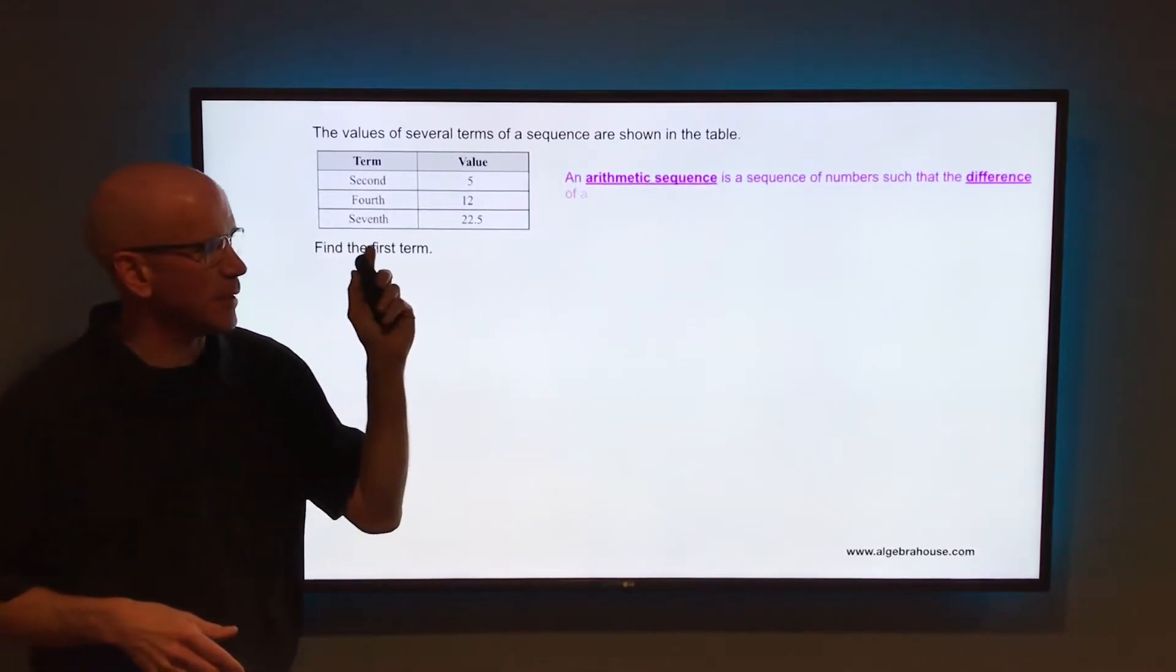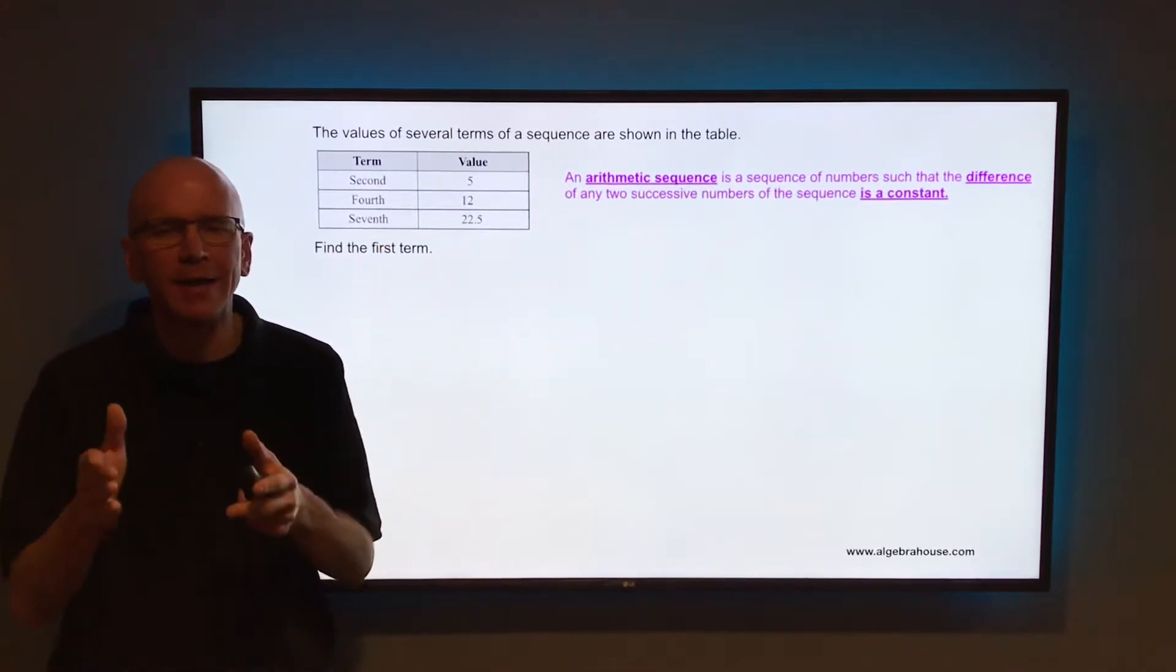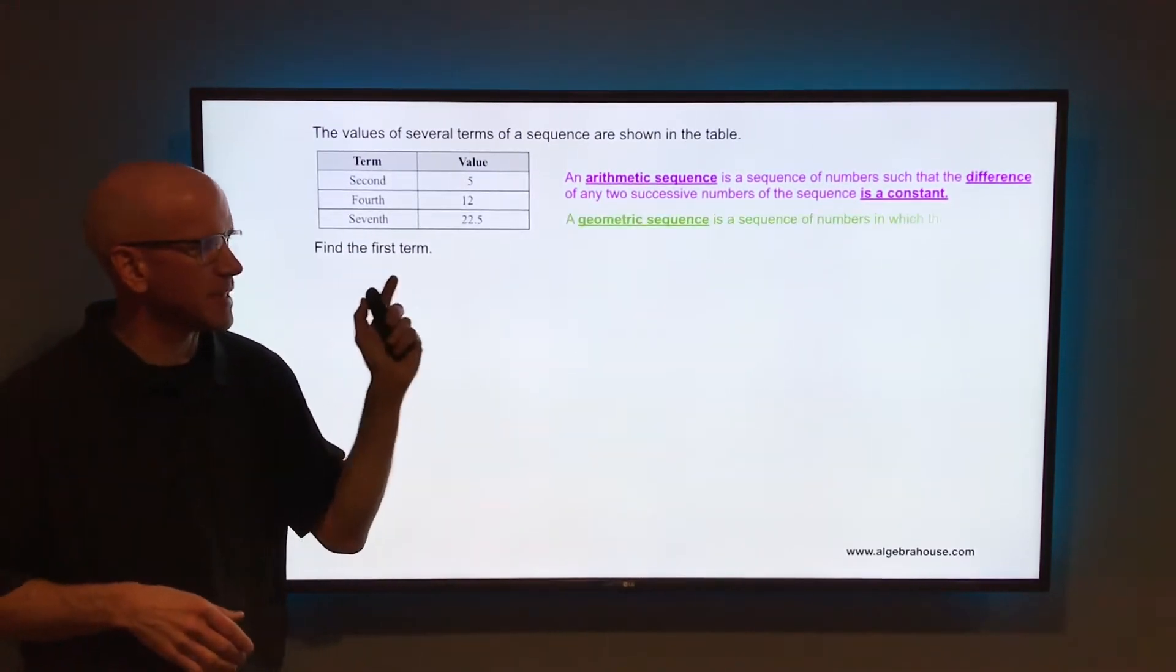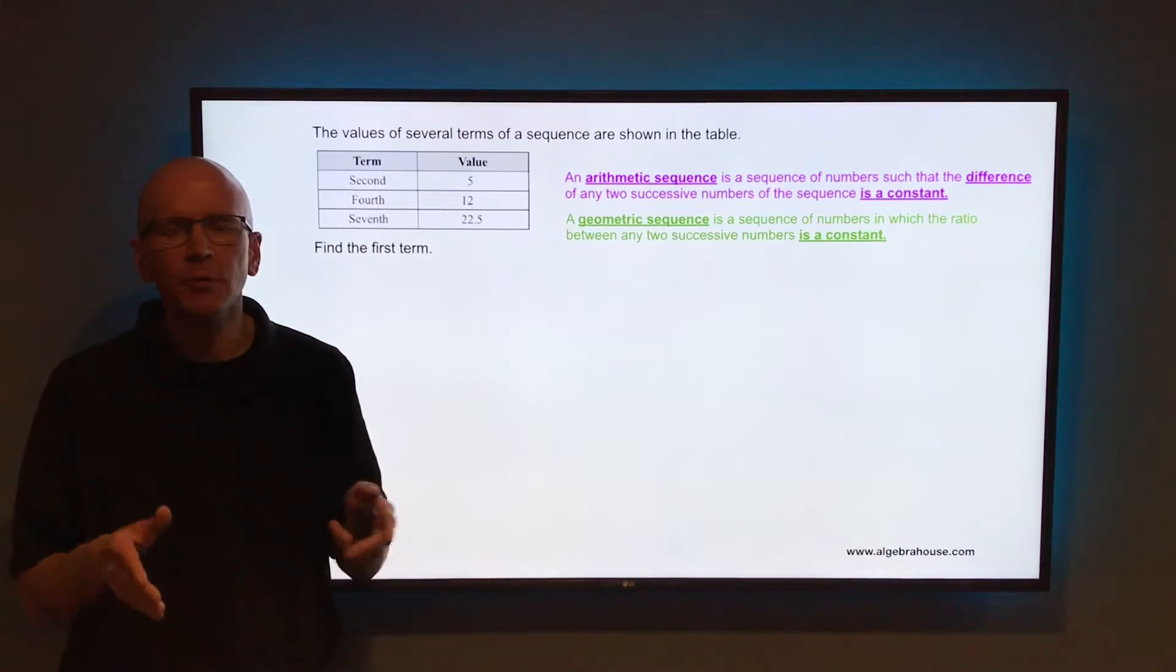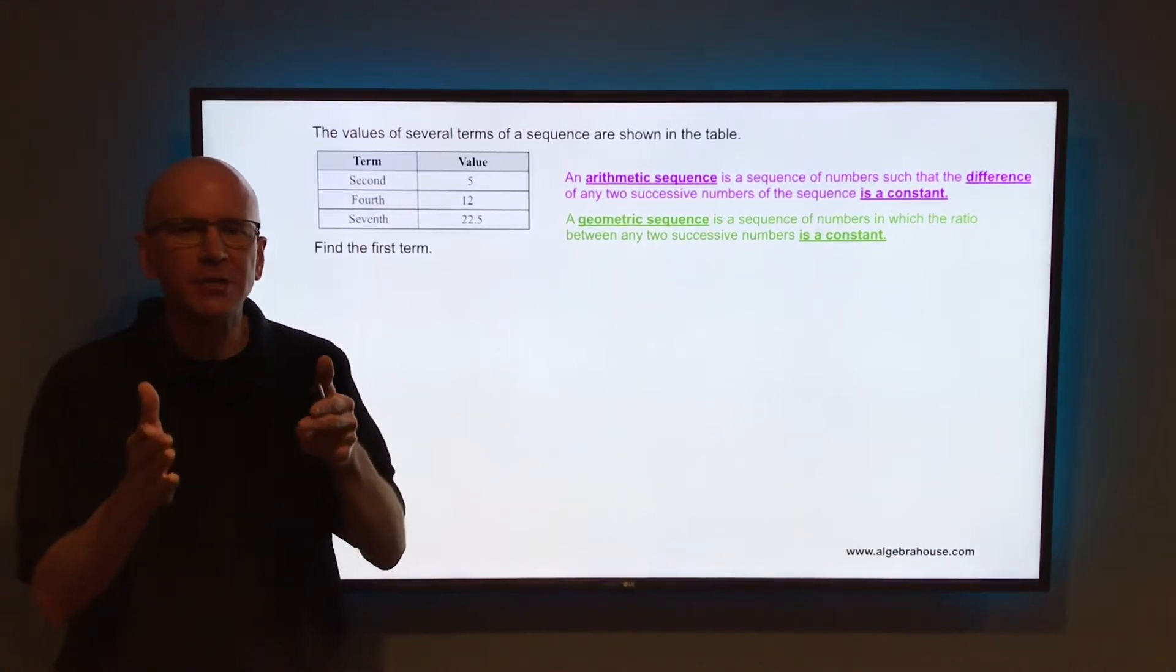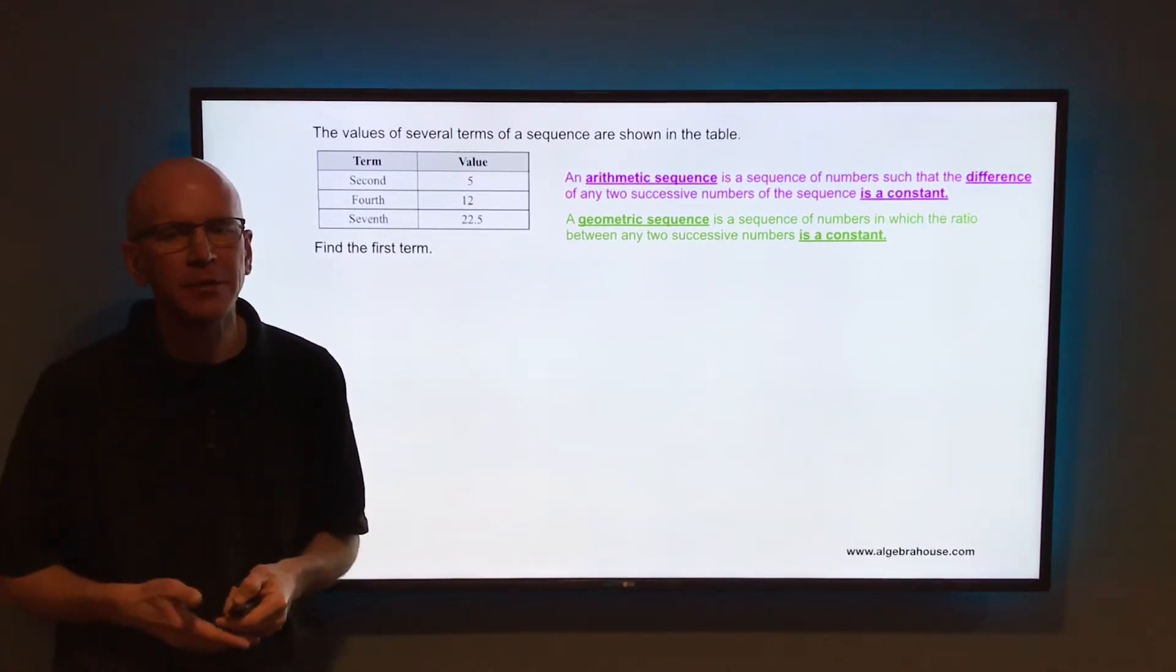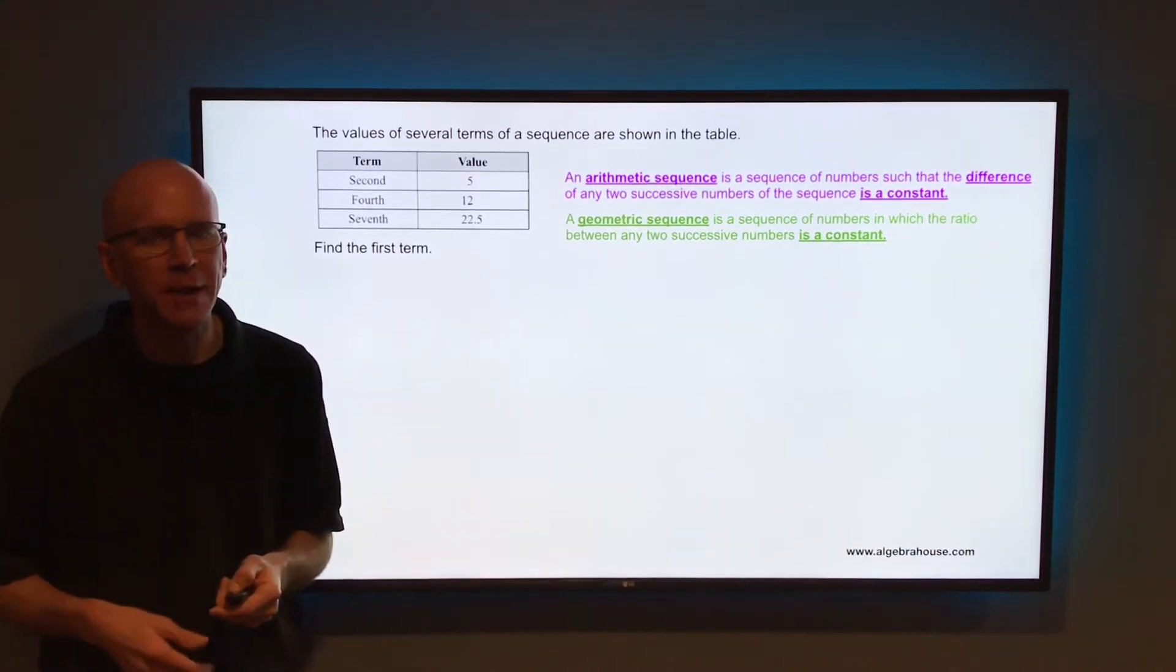In an arithmetic sequence, there is a common difference. In other words, you're adding or subtracting the same thing each time you jump from number to number. In a geometric sequence, there is a common ratio. In other words, you're multiplying by the same thing each time you jump from number to number. Looking at the numbers in this sequence, it's unlikely that's going to be a geometric sequence, but it could be an arithmetic sequence.